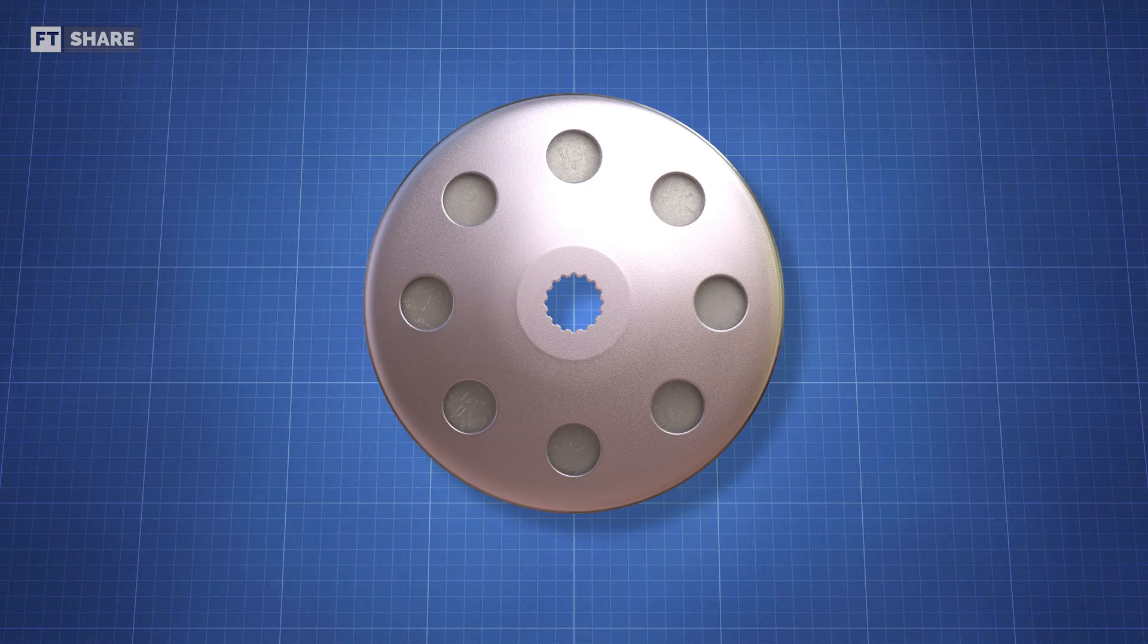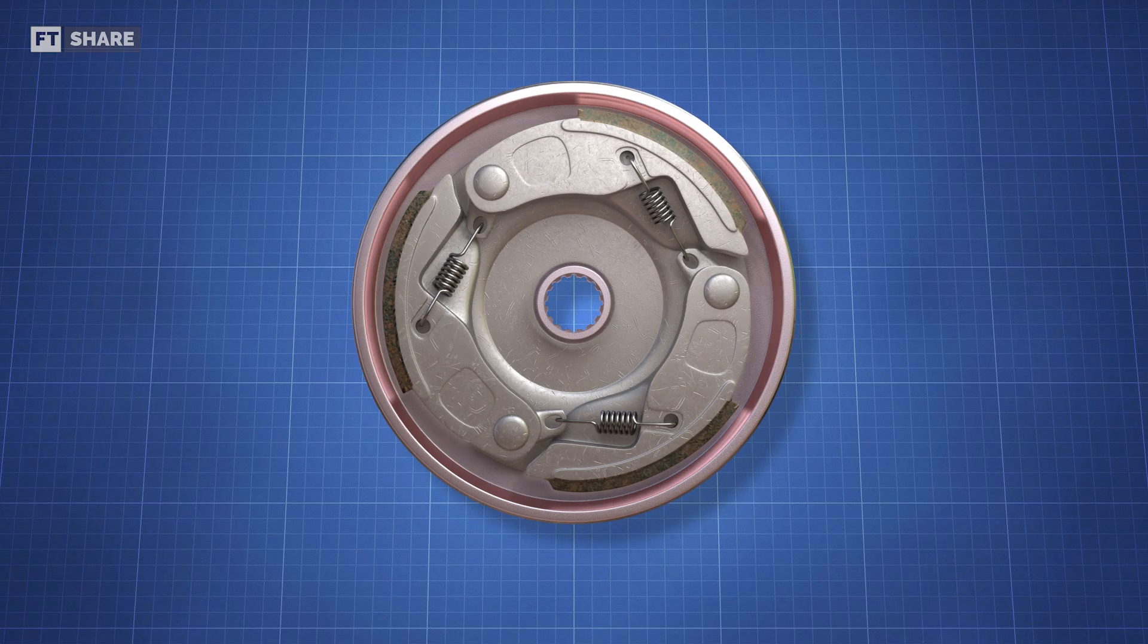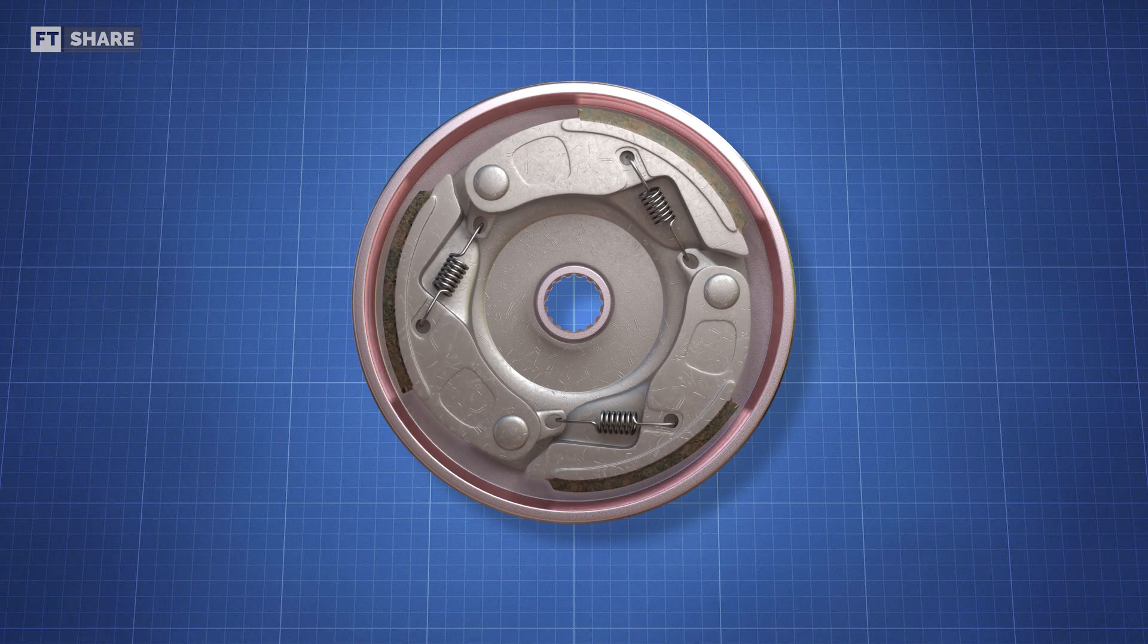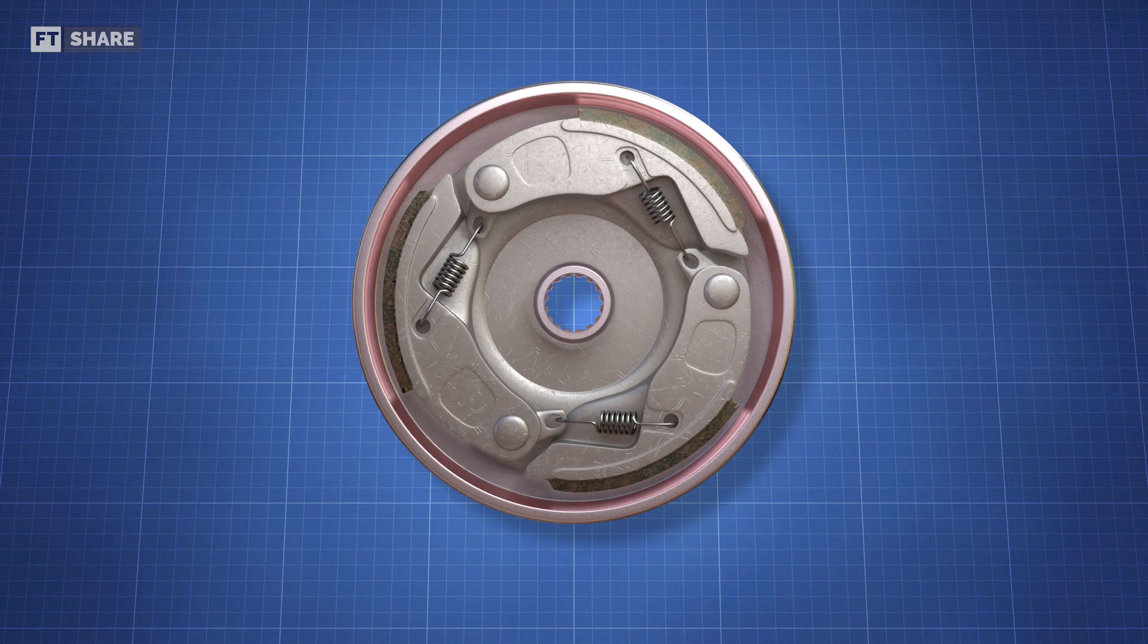The inner part of this clutch consists of weighted arms held by tension springs. These arms are connected to the pulley or secondary sheave, while the clutch housing is connected to the output gear.